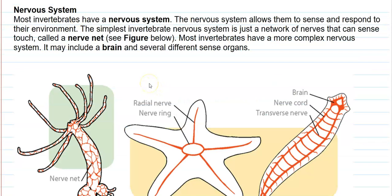Next we look at the nervous system present in most invertebrates. This system helps them to sense and respond to the environment. The simplest form is just a network of nerves that can sense touch, typically referred to as a nerve net. In the diagram you can see the nerve net functioning in a hydra. Most invertebrates have a more complex nervous system, and sometimes even a higher structure such as a brain is present to help communicate information between different sense organs.